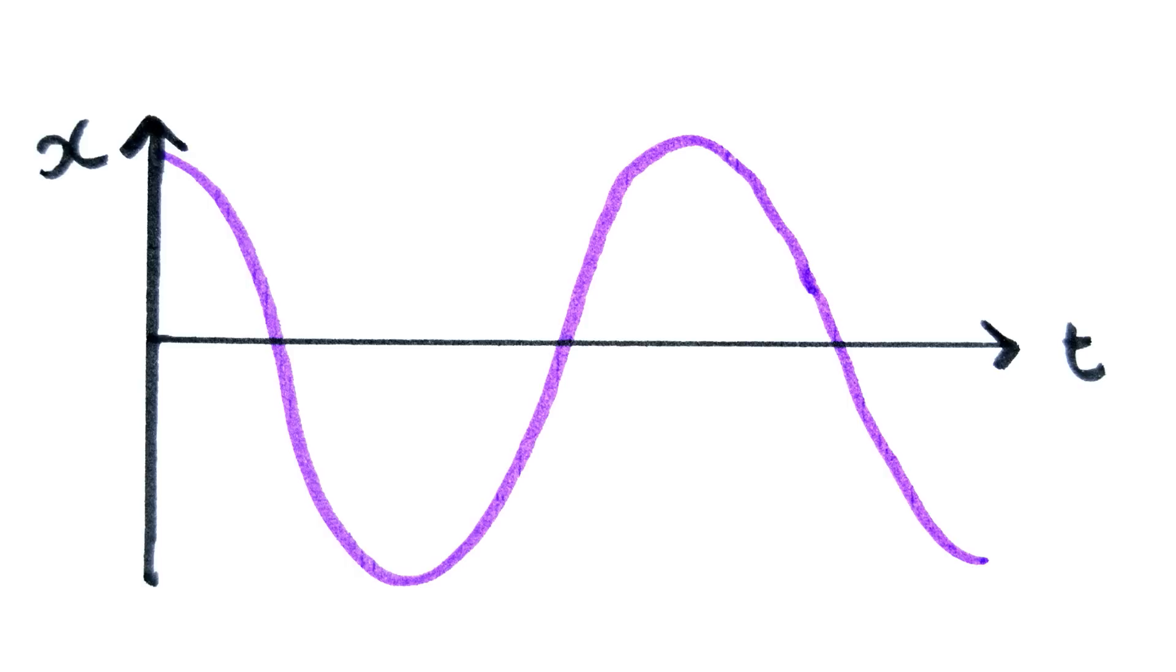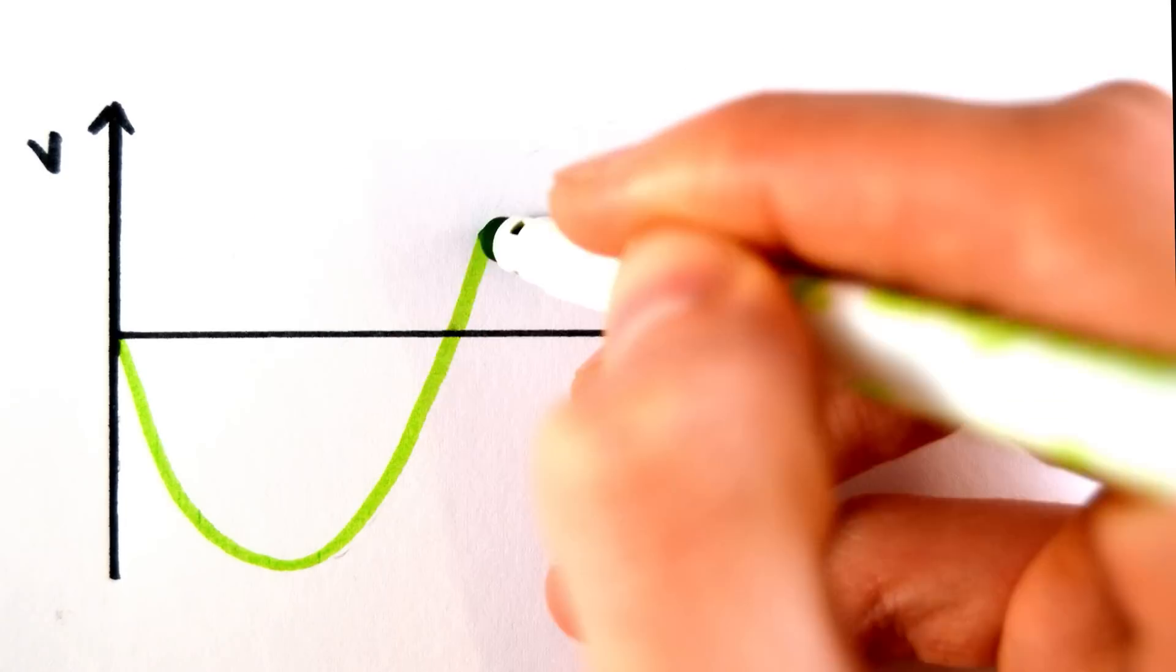When the displacement is zero, the velocity is a maximum. When the displacement is a maximum, the velocity is zero because it has reached its turning point. Using this we can join up the points to give this curve.